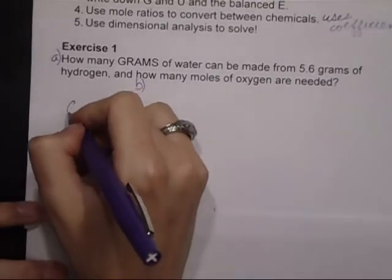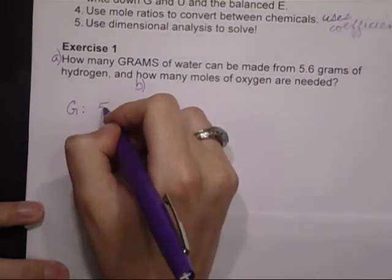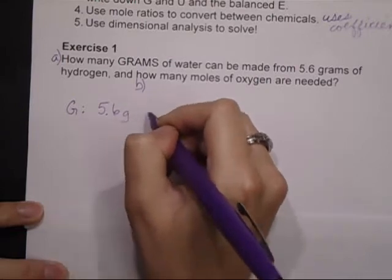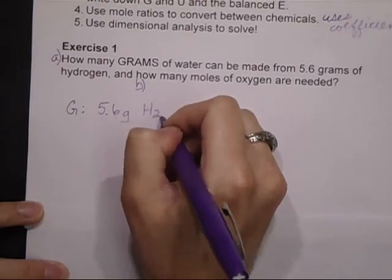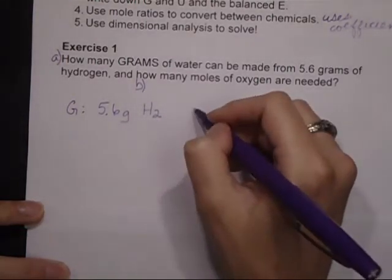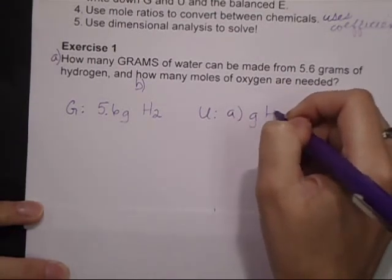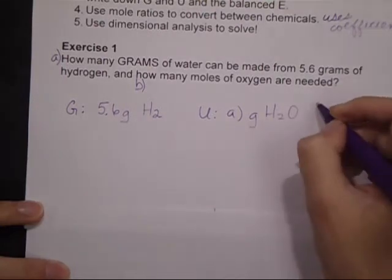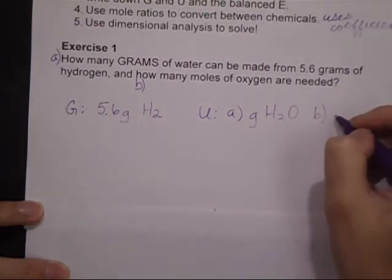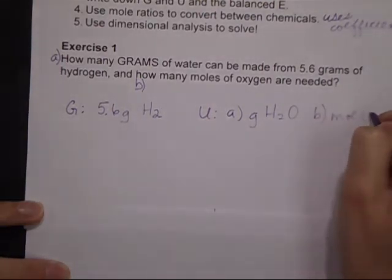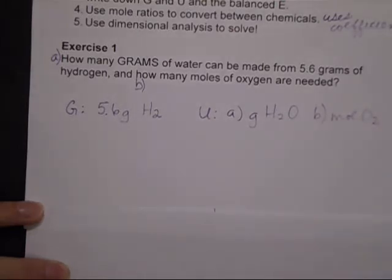First I'm going to start off with my given, and I have 5.6 grams of hydrogen, which is diatomic, so I need to include that. My unknowns are to first find the grams of water that would be formed, and to second find the moles of oxygen that would be needed.